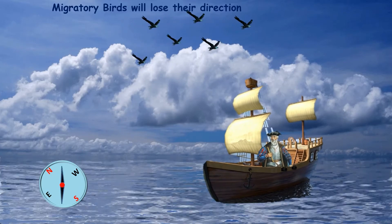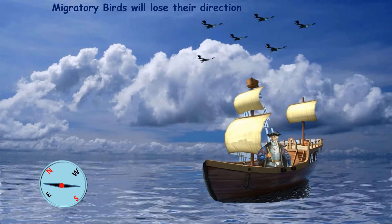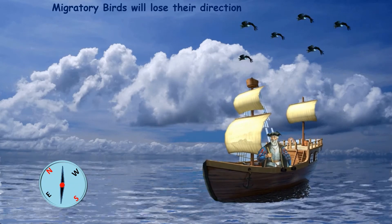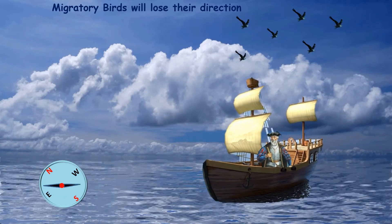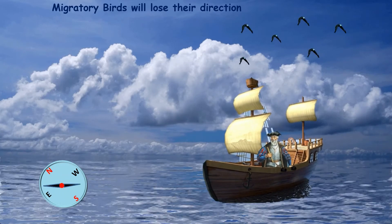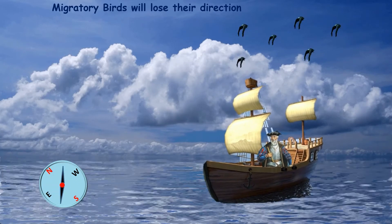Many animals and birds that depend on the biological compass navigation can be in serious trouble. Sea turtles, honeybees can lose their way. Migratory birds may fly in the wrong direction, threatening their survival. Without a magnetic field, Vasco de Gama would not have reached India.